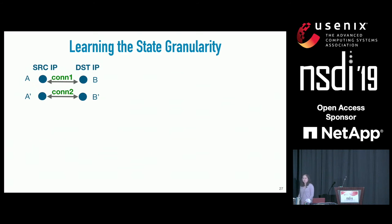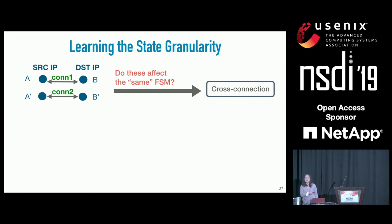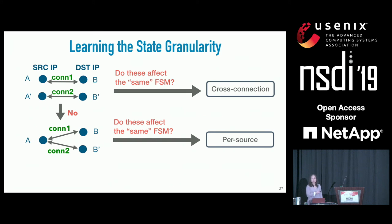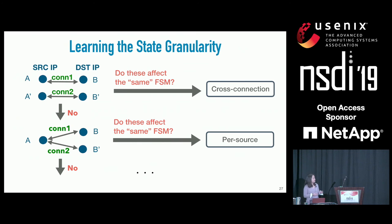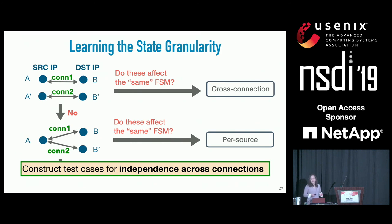To infer state granularity, the high-level idea is simple. Configure two connections with different source and destination IPs, and check whether they affect the same FSM using our L*-based workflow. If they do, the NF keeps cross-connection state. If not, we repeat the test using the same source IP—if they affect the same FSM, the NF keeps per-source state. The key takeaway is that we use independence assumptions across connections to construct test cases distinguishing different state granularity types.